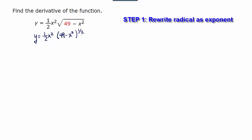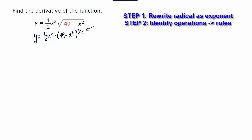So I'm going to rewrite this as a one-half power and now I'm going to look at the operations occurring here which are that there's a product and that we have an exponent. Whenever we have an exponent that means in some way we're going to use a power rule.